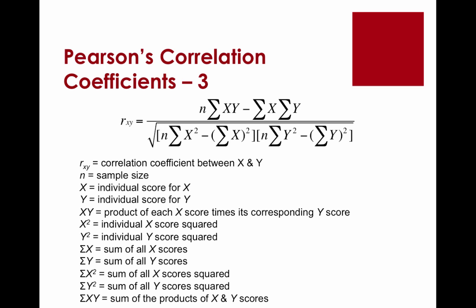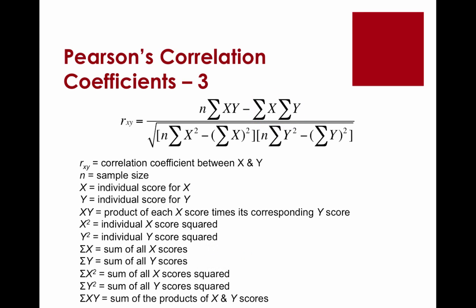Don't freak out — everybody freaks out, I even freak out when I see this. But we are going to have to work through this calculation, and you'll need to know how to do this for your exams. Let's focus on the numerator first. N is our sample size. Sigma, as we've seen before, means the sum. Sigma xy indicates the sum of the products of x and y scores — we multiply each x and y pair and then add up all those products. Then we subtract the sum of x times the sum of y: add up all x scores, add up all y scores, and multiply those two sums. That's our numerator.